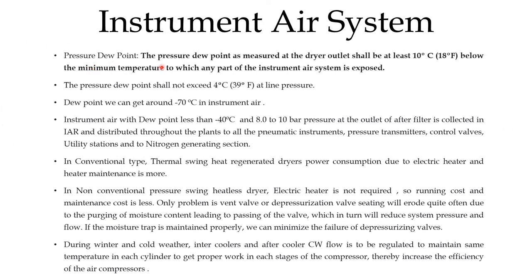Now we can see the pressure dew point. The pressure dew point as measured at the dryer outlet shall be at least minus 10°C when the instrument air is used in the system. The pressure dew point shall not exceed 4°C at line pressure. The dew point achievable in the instrument air is around minus 70°C. Instrument air with a dew point less than minus 40°C is the requirement at 8–10 bar pressure. At the output of the after-filter, instrument air is collected in the instrument air receiver and distributed through the plant to all pneumatic instruments, pressure transmitters, control valves, utility stations and the nitrogen generator.